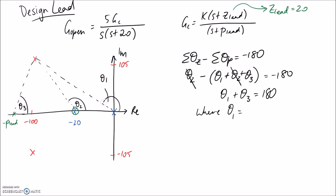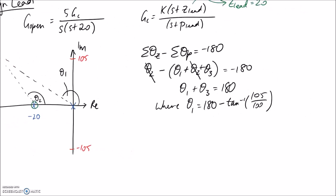We can figure out theta 1 by taking 180 degrees and subtracting the small angle using inverse tan of the opposite over the adjacent. The opposite is 105 and the adjacent is 100, which works out to 133.63 degrees. Now for theta 3, looking at that angle I can directly apply trig: it'll be tan inverse of 105 divided by the difference between P_lead and 100.